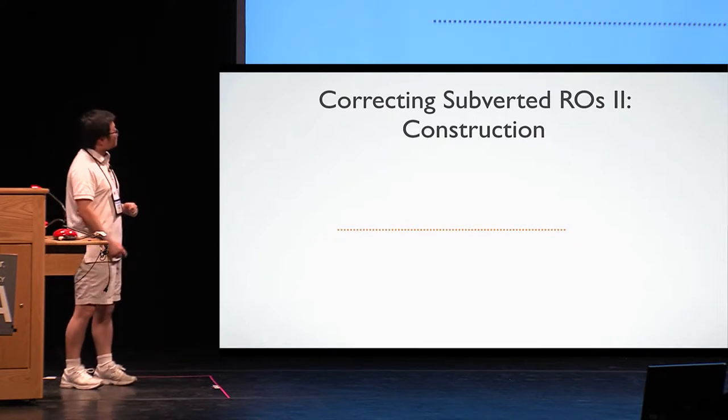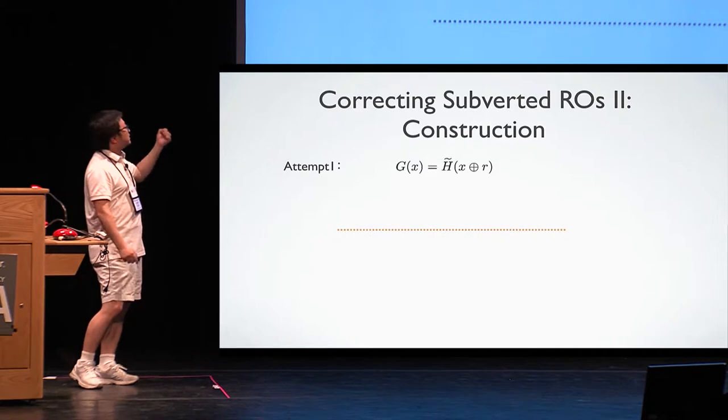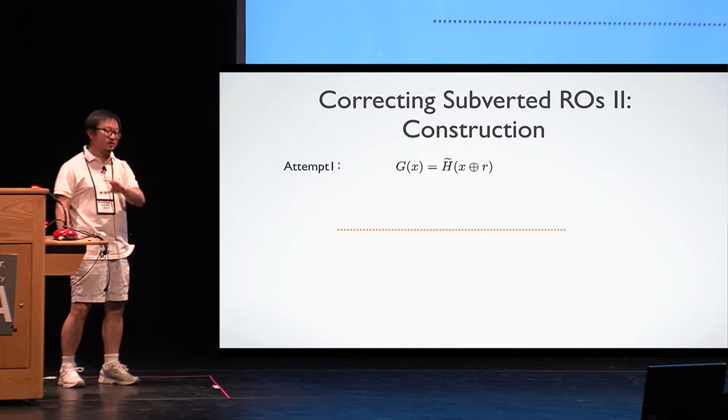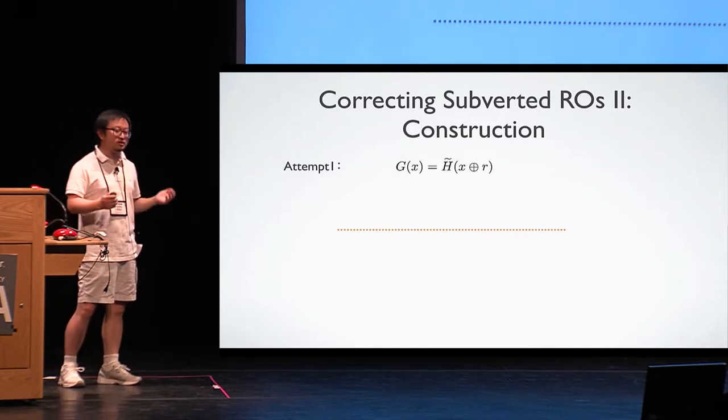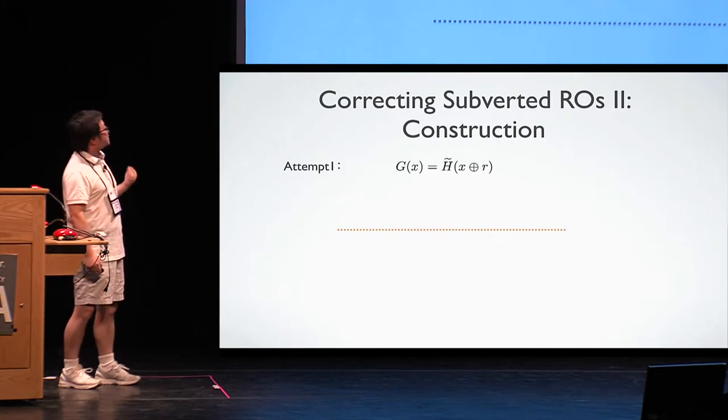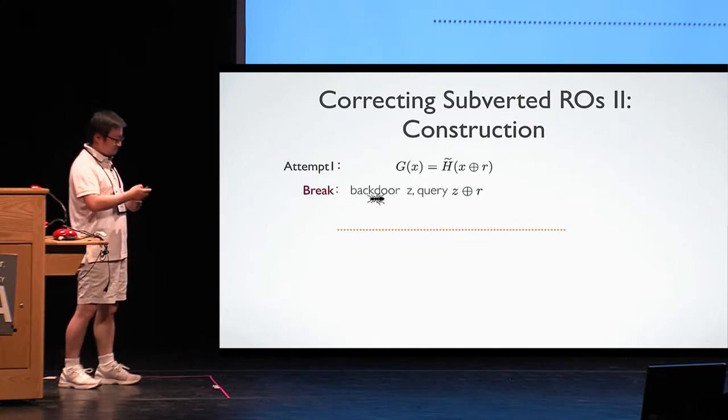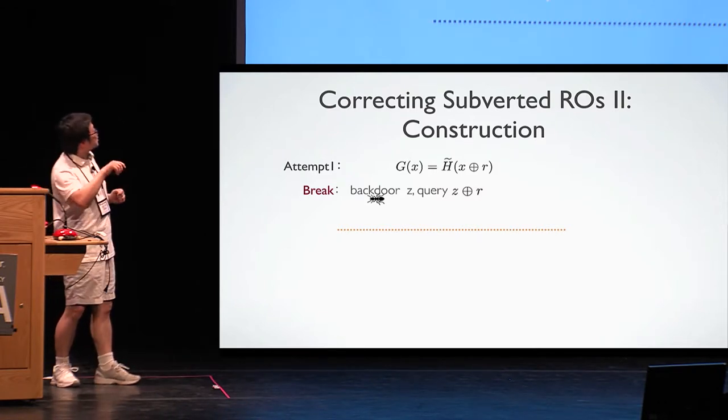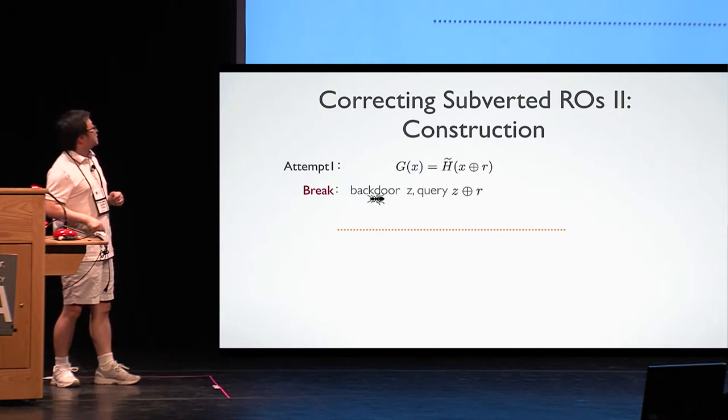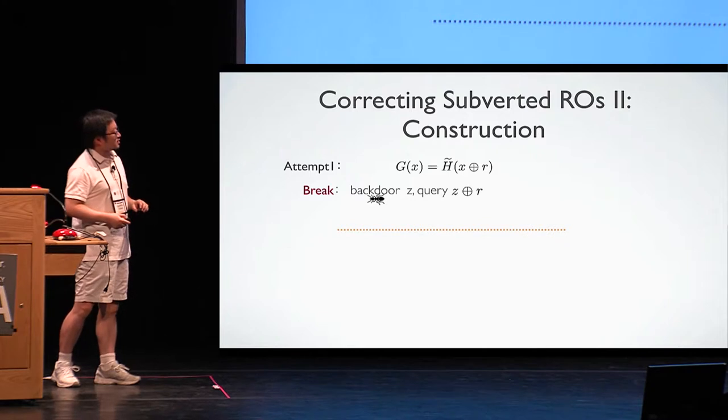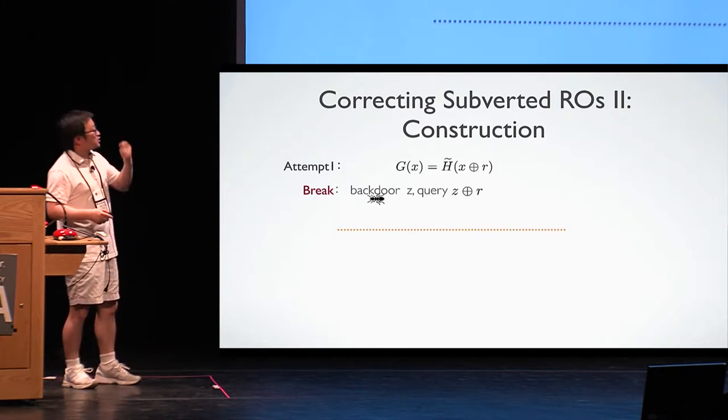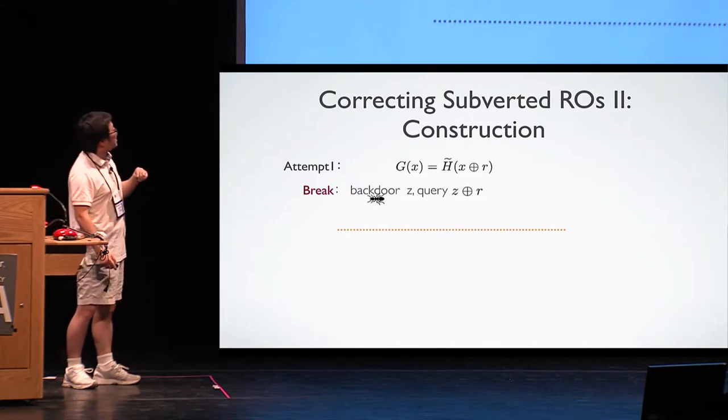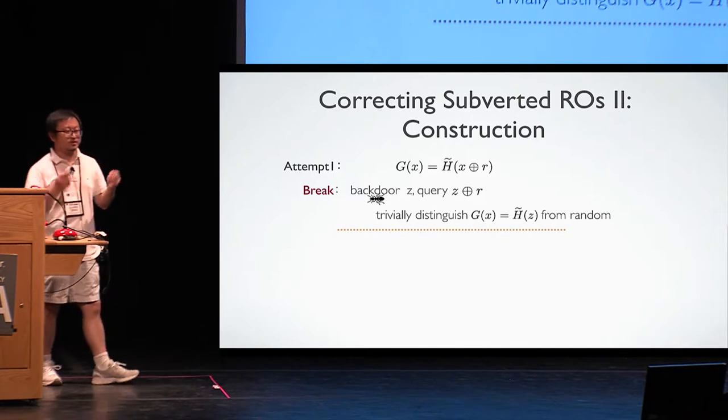Let's make some attempt. So first and very natural and simple idea is still we want to shift the input, right? Because the trigger is contained in input. If we can map the input somehow to random places, then we are good. But this construction obviously is easy to attack. Because the randomness here used is public. The attacker actually knows when the attacker originally implants the backdoor z in the H tilde, all the attacker needs is just to find back this backdoor. He simply shifts, he chooses the input such that when shifted after the randomness r, he will map back to the original backdoor z.